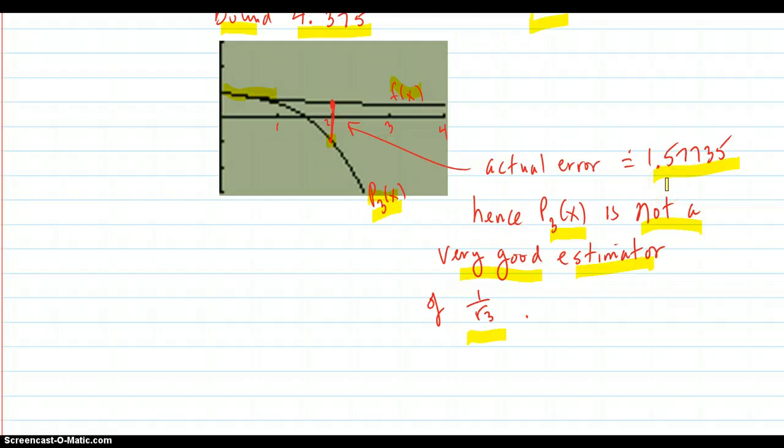So the actual error is this. So hence P3 of x is not a very good estimator of 1 over the square root of 3 when your Taylor polynomial is centered at 0. If it was centered close to 2 it would have been a better approximation. Or if you had a higher degree of the Taylor polynomial it would have been better.